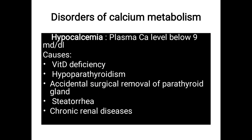Disorders of calcium metabolism: hypocalcemia is when plasma calcium level is below 9 milligram per dL. Causes include vitamin D deficiency (calcitriol deficiency) and hypoparathyroidism — less secretion of parathormone — because parathormone increases serum calcium, so in its absence calcium decreases. Another cause is accidental or surgical removal of the parathyroid gland, for example during thyroidectomy where the parathyroid gland may be accidentally removed.